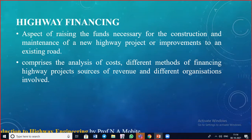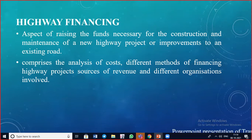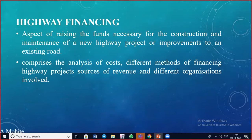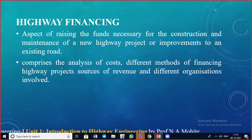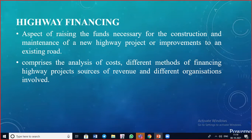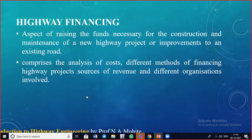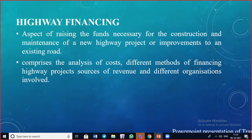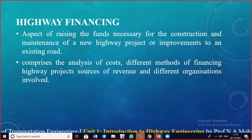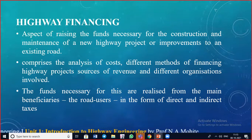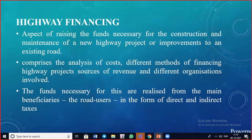An approximate cost of construction is decided initially, because unless you know the amount required for new construction, maintenance, or improvements you cannot raise or arrange the funds. The funds are either taken as a loan or raised from government taxes. The funds necessary are realized from the main beneficiaries — the road users — in the form of direct and indirect taxes.